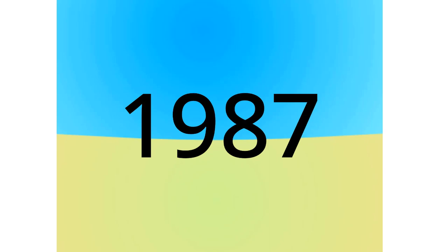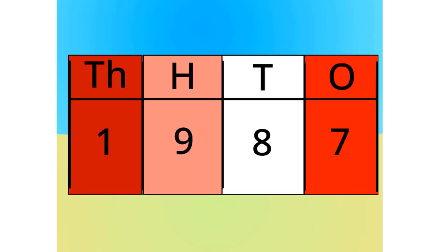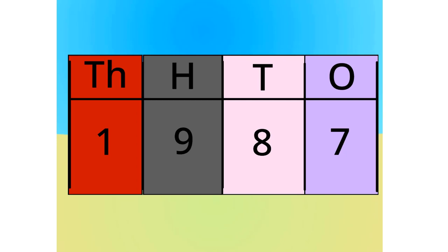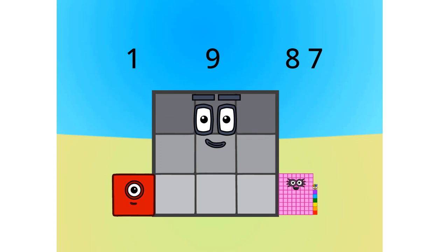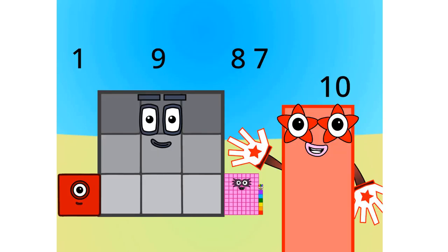All right, let's split it into its units. This number is made up of one thousand, nine hundreds, eight tens, and seven ones. See? Let's see this in block form, shall we? As you can see, this number is one thousand, nine hundreds, eight tens, and seven ones. Let me carry on with the first method.